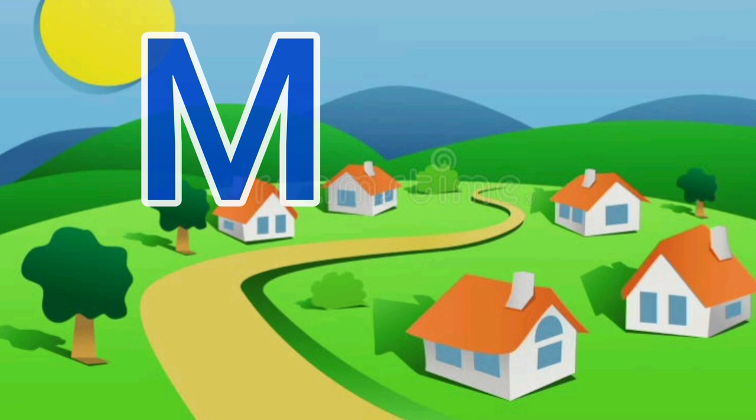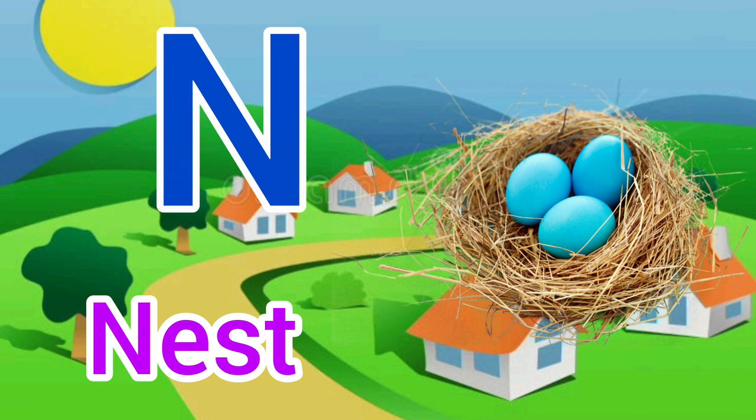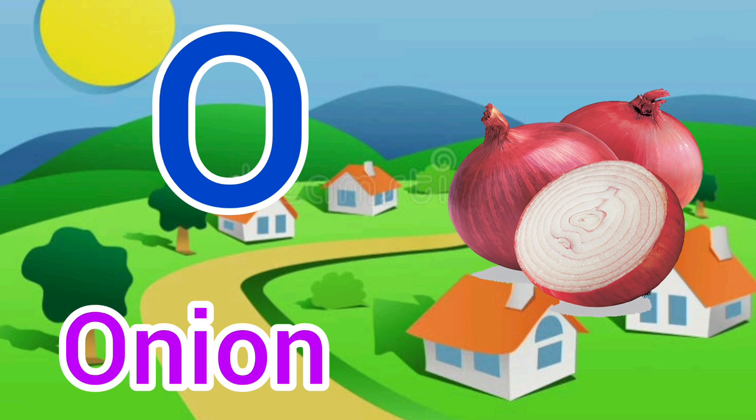M for milk. Milk means dude. N for nest. Nest means gosla. O for onion. Onion means piyaz.